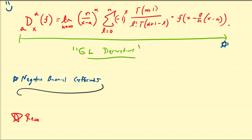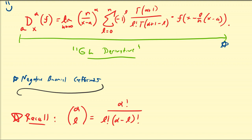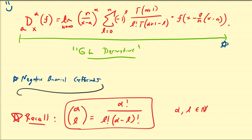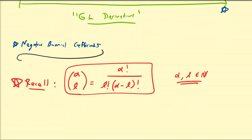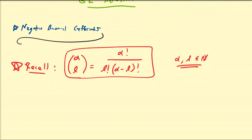Recall that the binomial coefficient alpha over L is defined to be equal to alpha factorial over L factorial times alpha minus L factorial. This is its definition, and typically we assume alpha and L are natural numbers. But as we should already know, we can extend the binomial coefficients and factorials using gamma functions to have a broader domain for this function. What I'm going to do is expand alpha factorial and alpha minus L factorial to get a simpler expression.